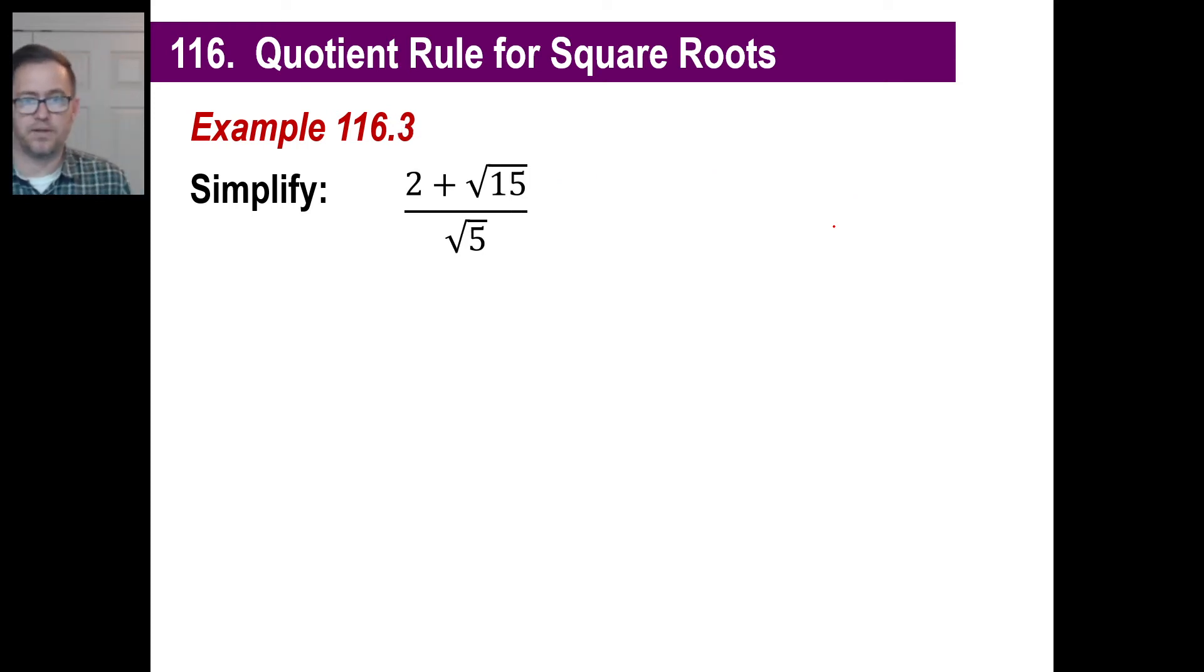Let's look at this one. Very similar. We know we're going to multiply by the square root of 5. So we get 2 times the square root of 5, and we get the square root of 15 times the square root of 5, which is the square root of 75. And that is all going to be over 5.